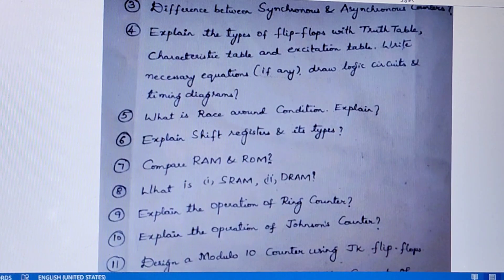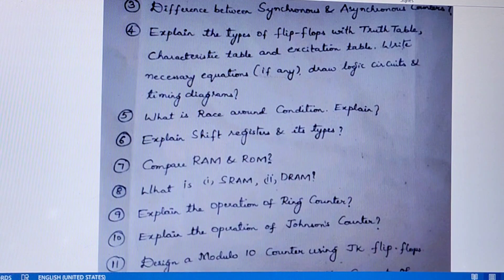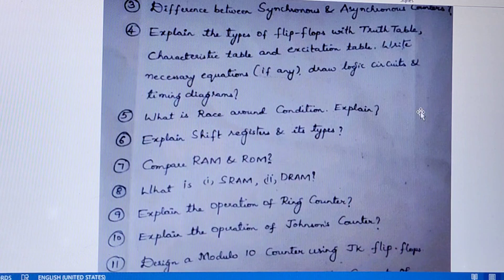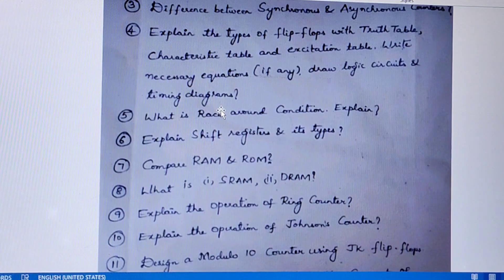For each flip-flop, explain its inputs and outputs, write the truth tables — present state and next state — the characteristic table, and excitation table. Draw the logic circuits and timing diagrams. Timing diagrams are a must.